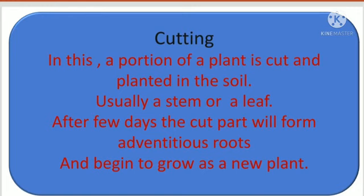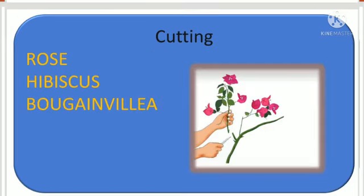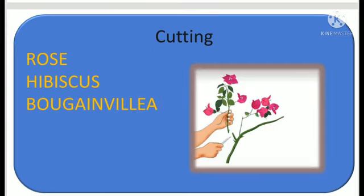In cutting, a portion of a plant is cut and planted in the soil, usually a stem or a leaf. After a few days, the cut part will form adventitious roots and begins to grow as a new plant. This method is very useful in rose, hibiscus, bougainvillea, etc.